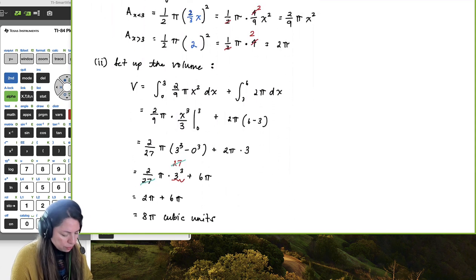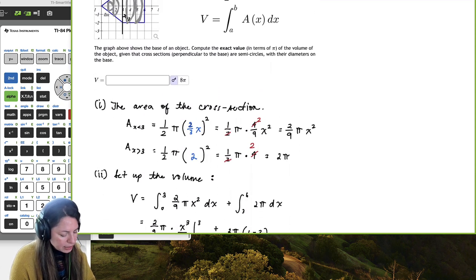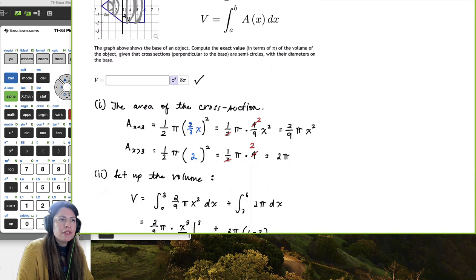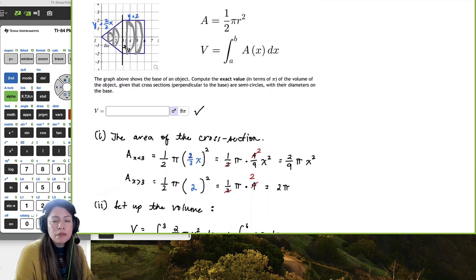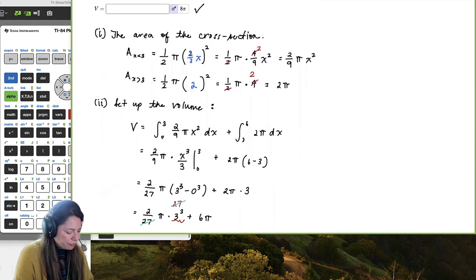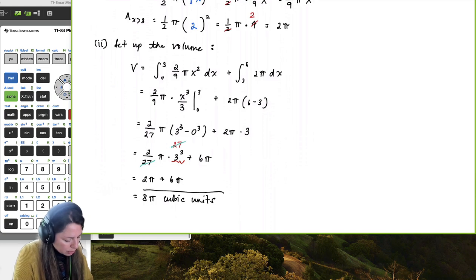And if I go up here to the original problem, I can see that that is definitely correct. So really what you need to do is just identify the area of the cross section, and the limits of integration, and then you can set up your volume. And then we can go ahead and box this. Thank you very much.